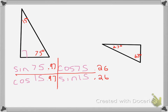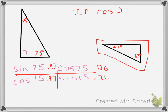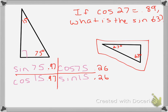This comes from questions you might get when you're not allowed to use a calculator. For example, on the non-calculator portion of the EOC, you might be asked: if the cosine of 27° is 0.89, what is the sine of 63°? Since sine and cosine of complementary angles are always equal, and 27° and 63° are complementary, the sine of 63° must also be 0.89 — no calculator needed.